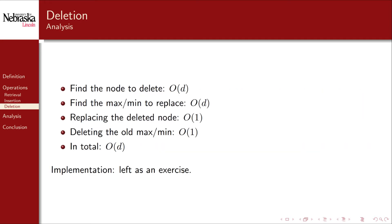There are several steps in this algorithm. Finding the node is order D as before. Finding the min or max to replace it with is also order D. Replacing the deleted node and deleting the old max or min are both constant operations — just a few reference shuffles. Thus in total, the whole algorithm is order D.